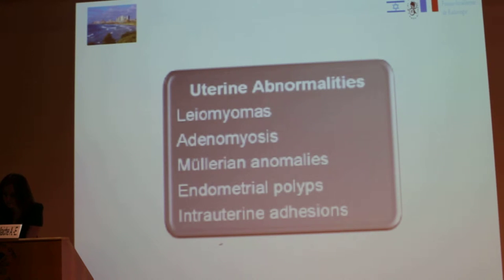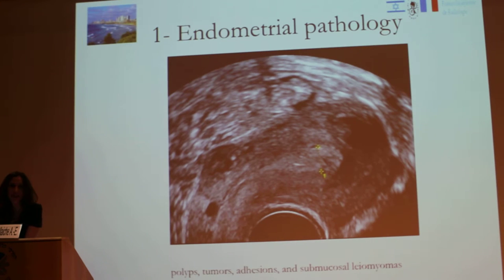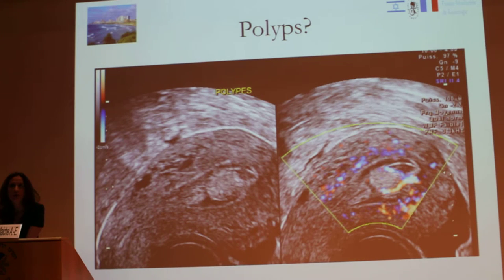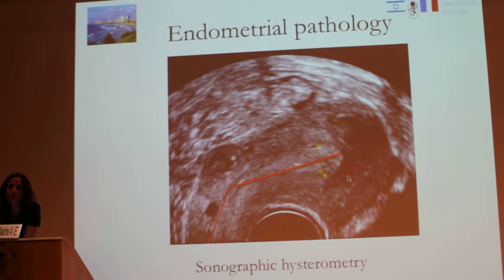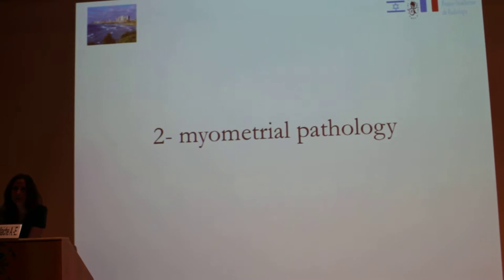For uterine abnormalities, the first etiology is endometrial pathology. Here you have an example of a polyp. It is important to take precise dimensions of this polyp before hysteroscopy. You can perform biometry of the cavity from the external cervical orifice to the depth of the cavity, which is important for eventual IVF after infertility management.